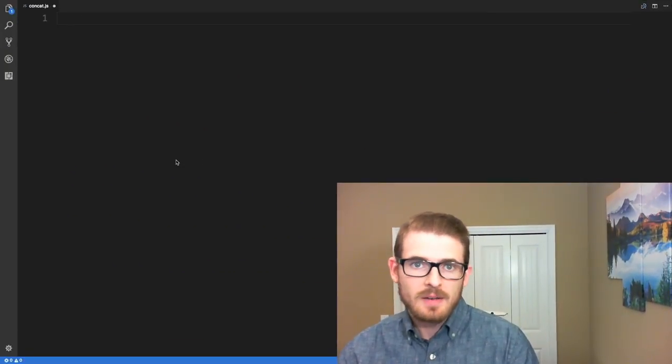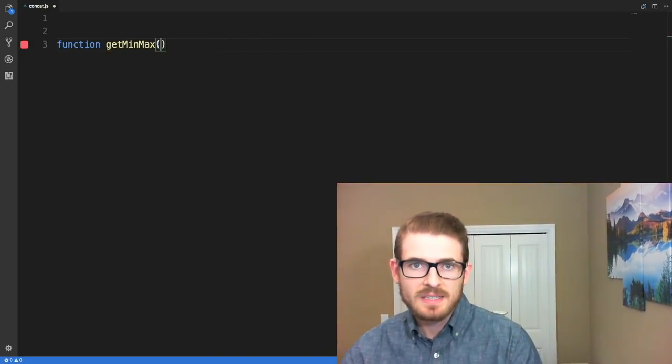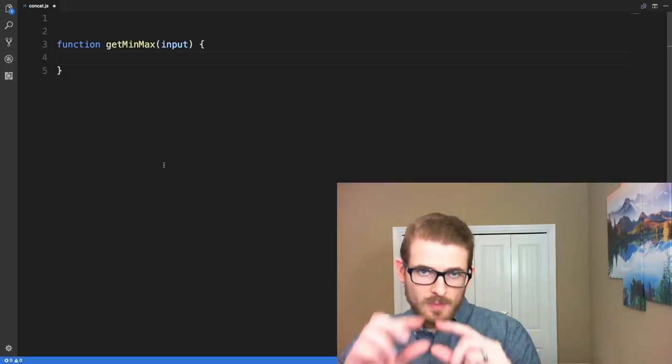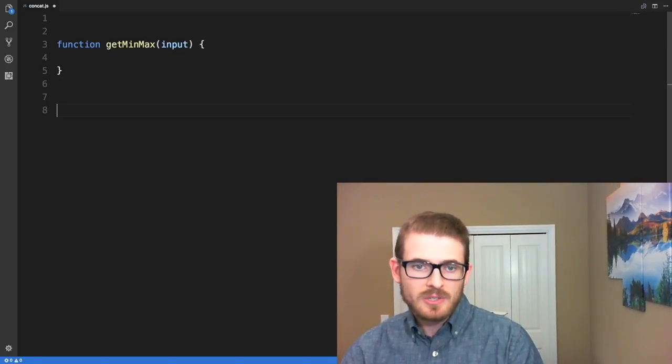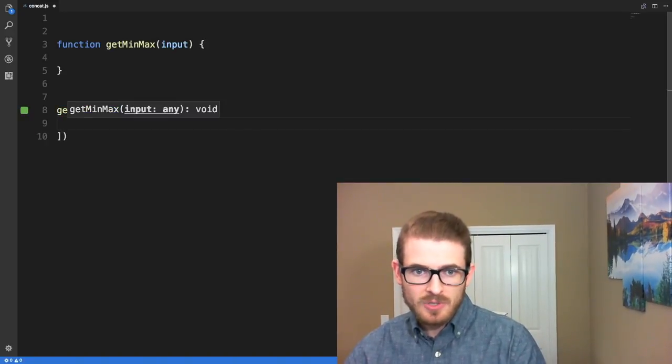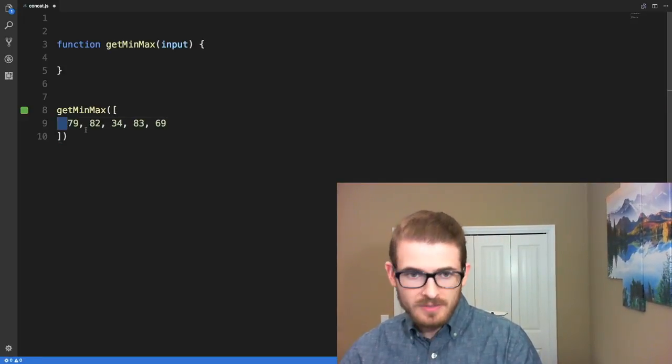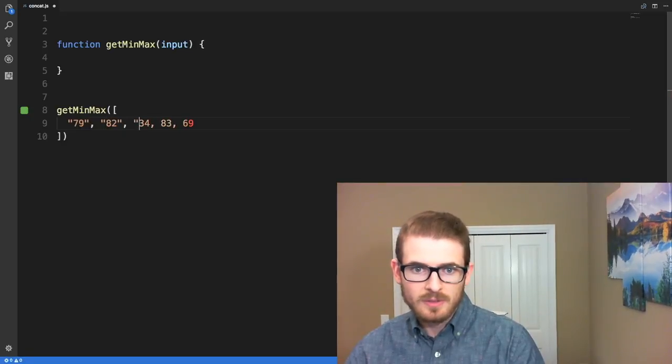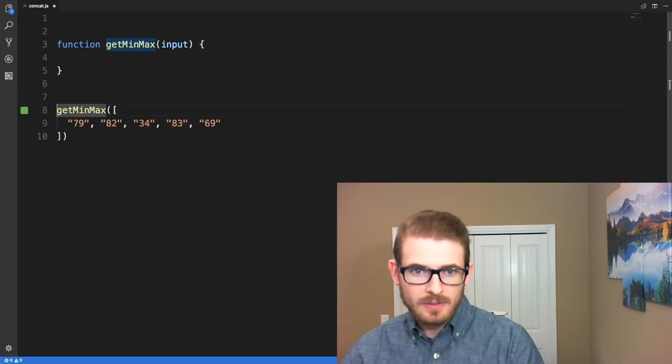So in JavaScript, let's first declare a function, and I'll call it getMinMax, which takes an input as a parameter, which is just going to be that array of numbers. And then here we're going to go ahead and just call it, getMinMax, and then we're just going to pass those numbers in. And just to make it simple, let's just convert these all to strings.